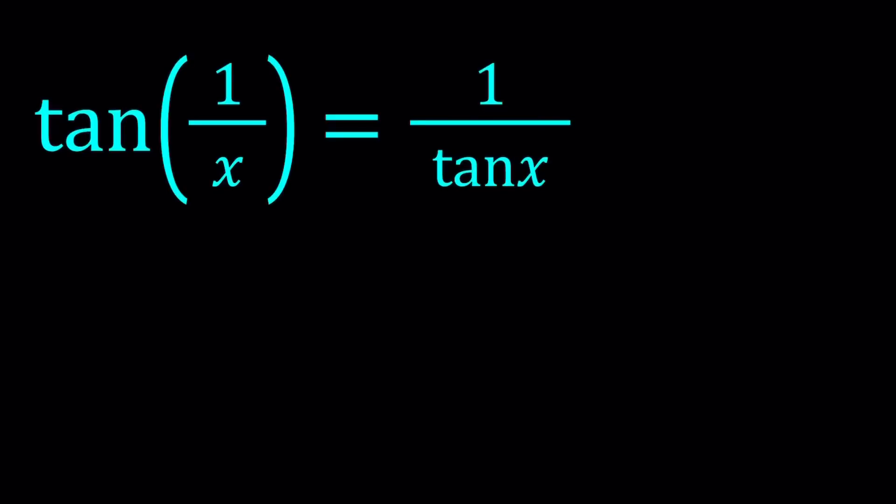Hello everyone. In this video we're going to be solving a very interesting trigonometric equation. Now we have tangent 1 over x equals 1 over tangent x. I don't think this problem has been solved on any other channel. I haven't seen it on YouTube. So this is probably the first time.